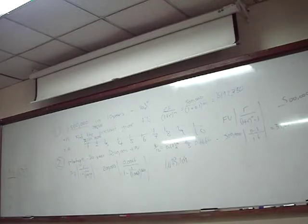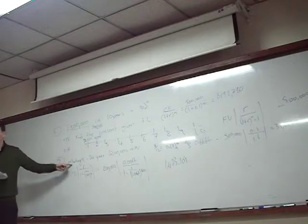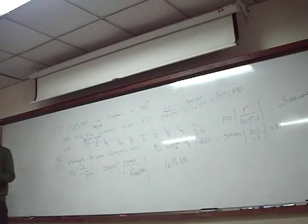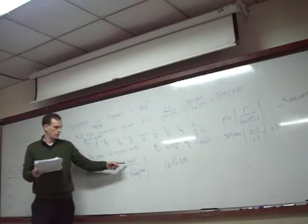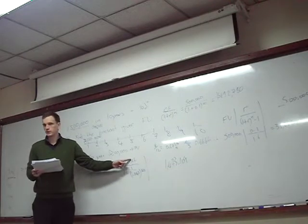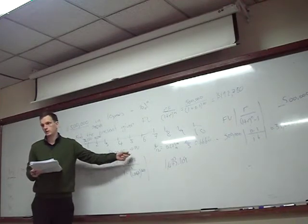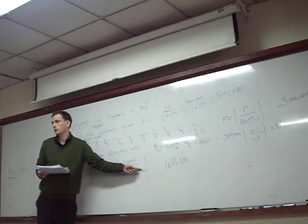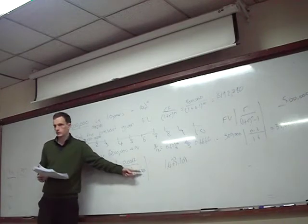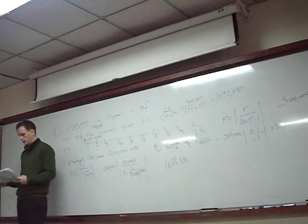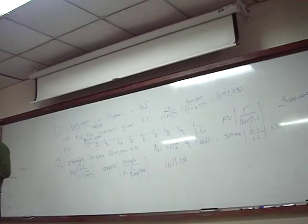Do you have any questions about this one? Common mistakes included using 30 instead of 360 for n, or using the annual interest rate 0.8 (8%) for the monthly calculation instead of converting to the monthly rate 0.0067. We need to decide whether we're doing yearly or monthly and adjust the interest rate accordingly.